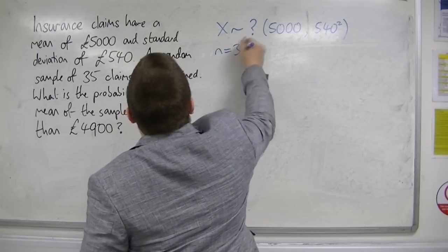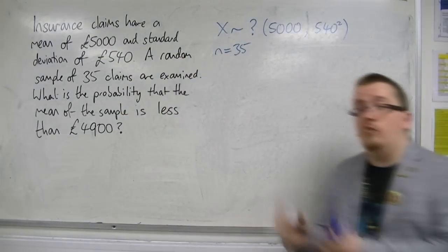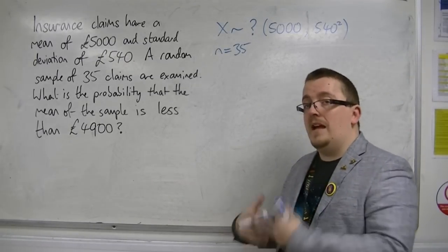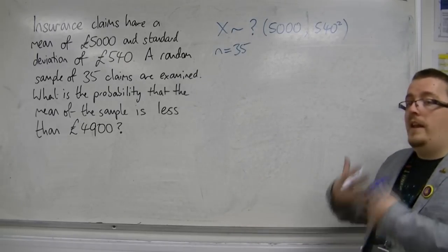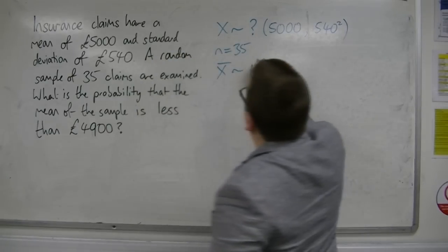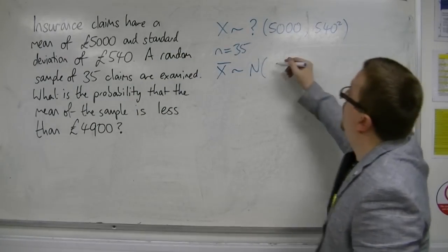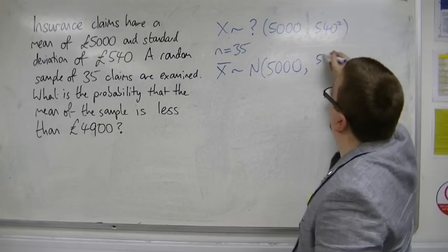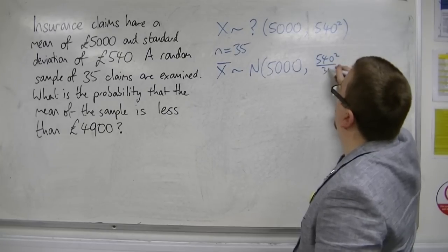So 35 is greater than or equal to 30. That means we have a sample size that is large enough that allows us to then say that the means will be normally distributed with a mean of 5,000 and a variance of 540 squared over 35.